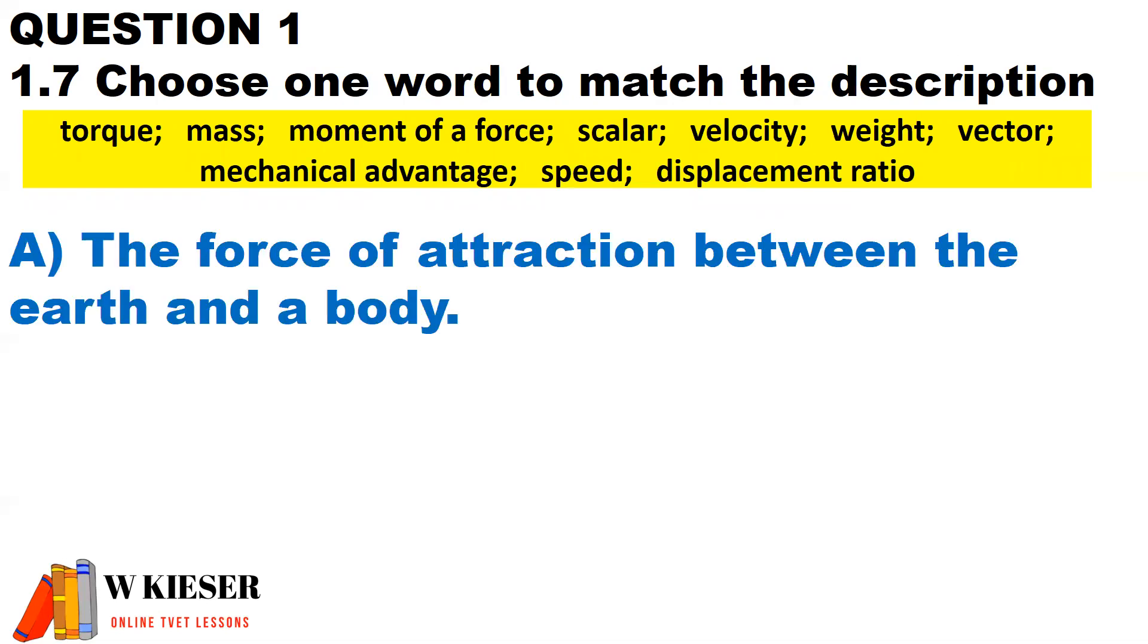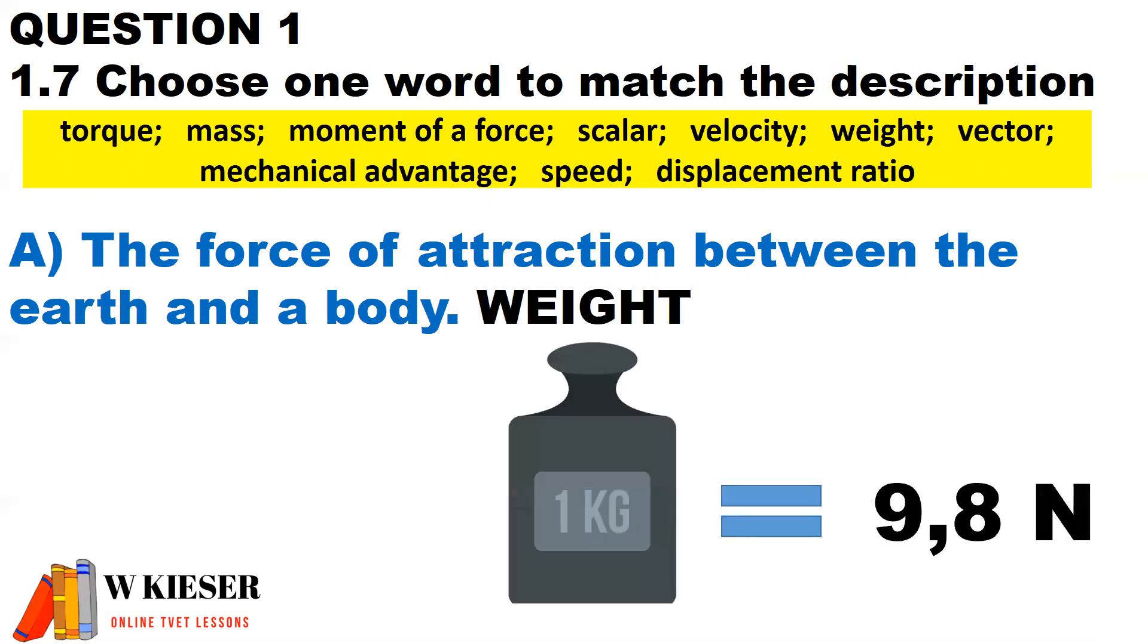the force of attraction between the earth and a body is known as weight. For example, for every one kilogram, it could be equivalent to 9.8 Newtons.